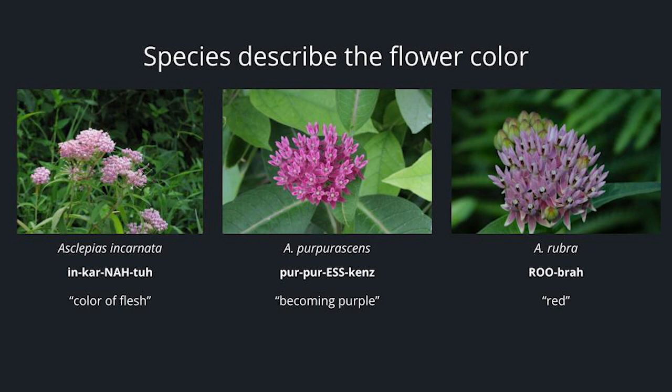Species can also describe the flower's color. We have Asclepias incarnata — incarnata means color of flesh for the color of the flowers. We have Asclepias purpurascens, which means the flowers essentially become purple as they bloom. And lastly, we have Asclepias rubra. Though the flowers in the picture look pink, there are variants in the species where they could be pink, lavender, red, or even purple. This species name designation has existed since Carl Linnaeus originally named it, so most likely the sample he had was a red-flowered plant — and that name has stuck with it.